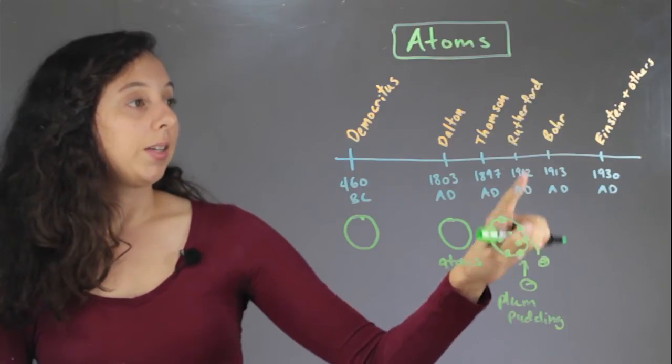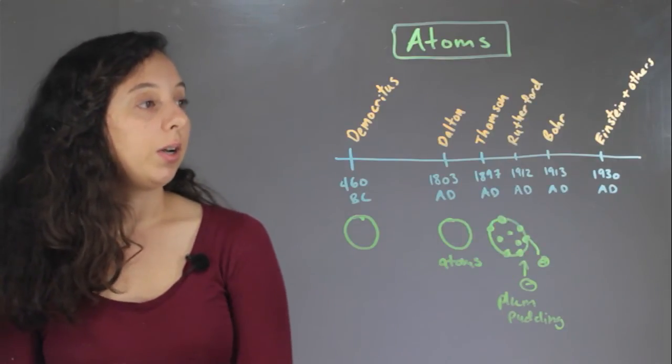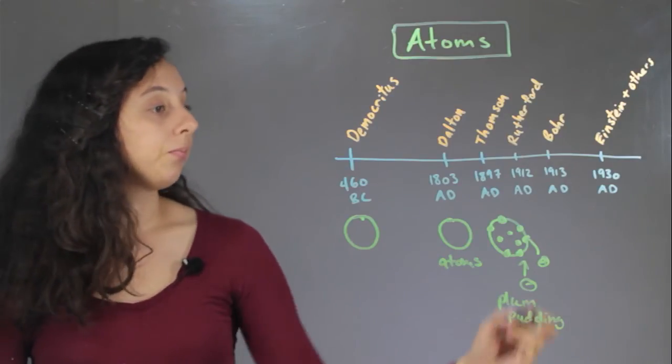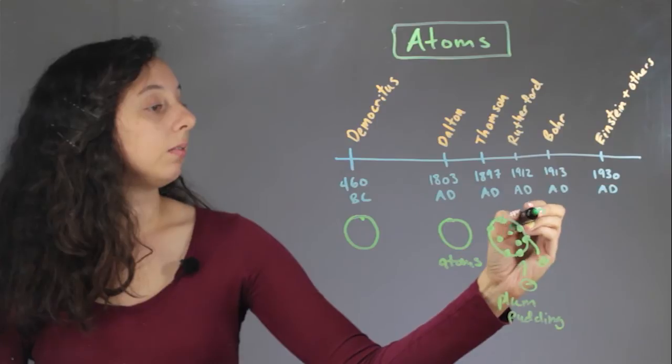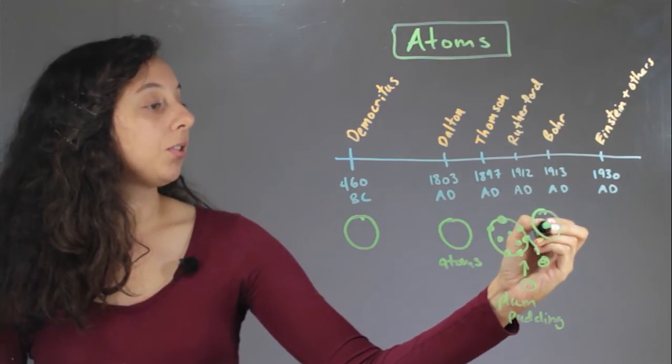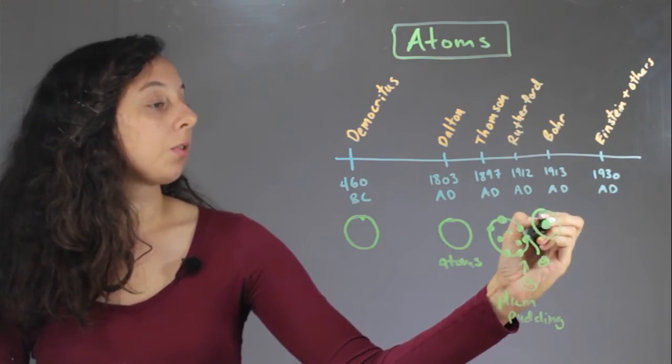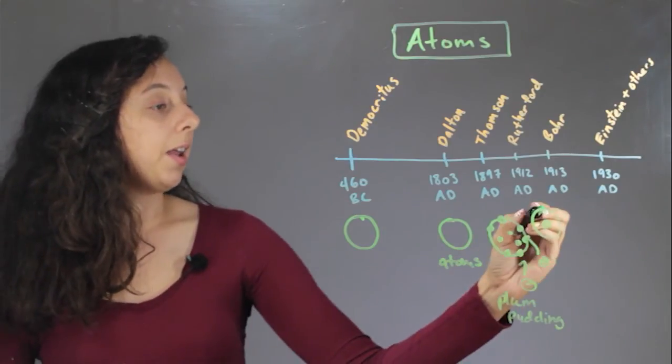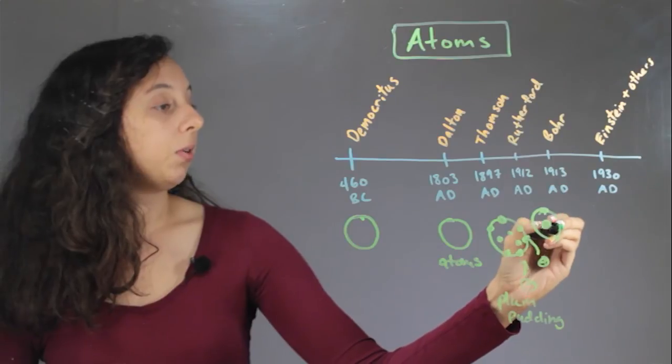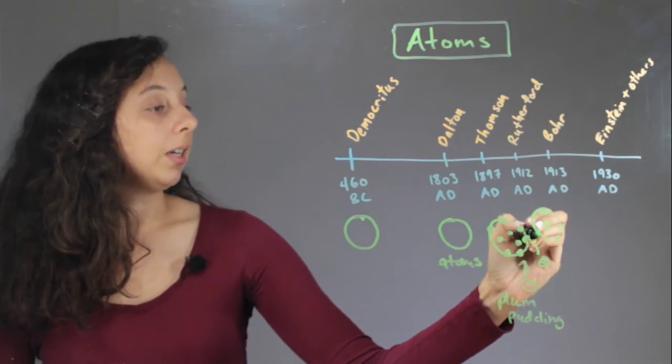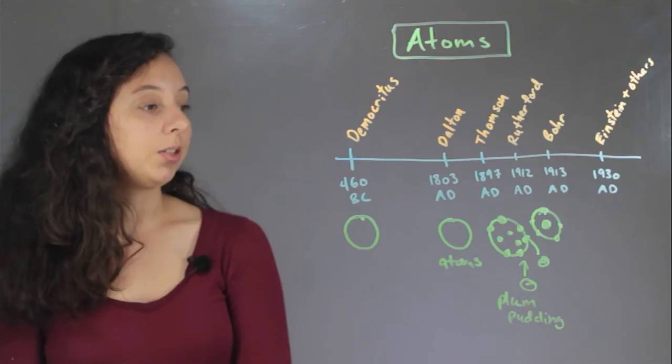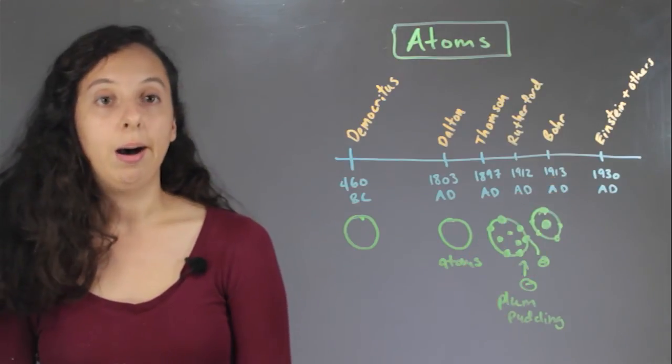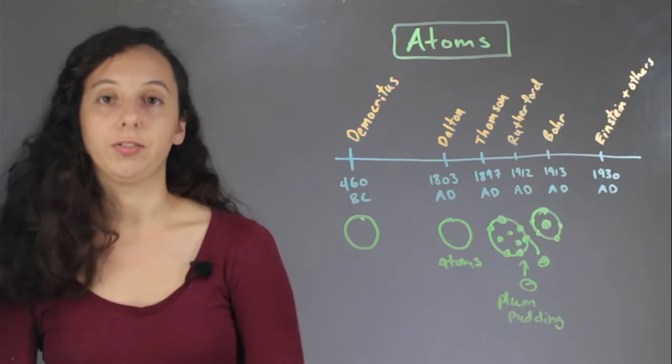So Rutherford was the next major discoverer, and what he discovered was that there was actually a nucleus inside the atom. So Rutherford figured out that most of the mass all comes from the center, and that the protons and neutrons were there, and that the negatively charged electrons were floating out around in a shell. And so he just kind of said, you know, the electrons are floating out somewhere, and the nucleus is positively charged.